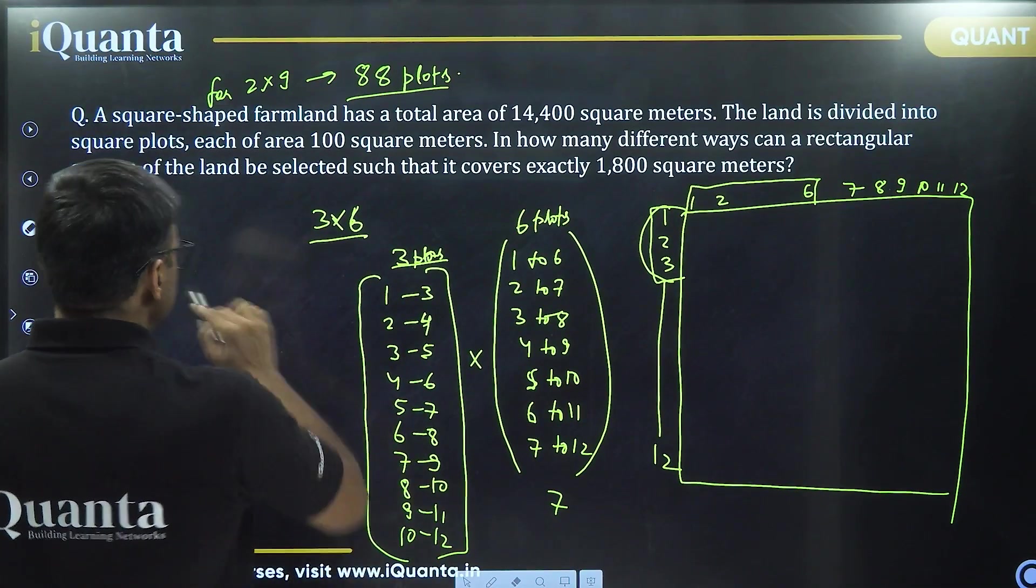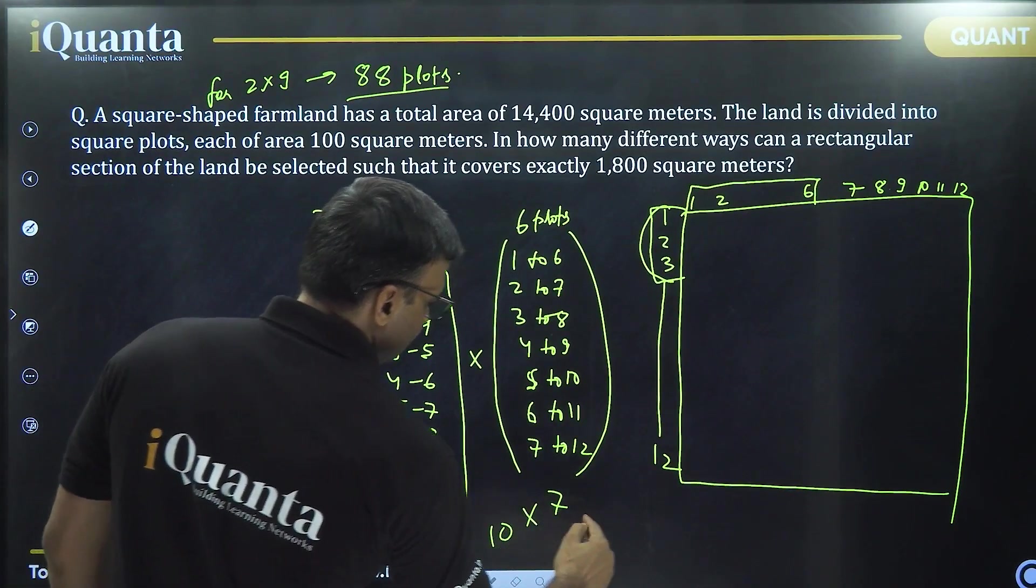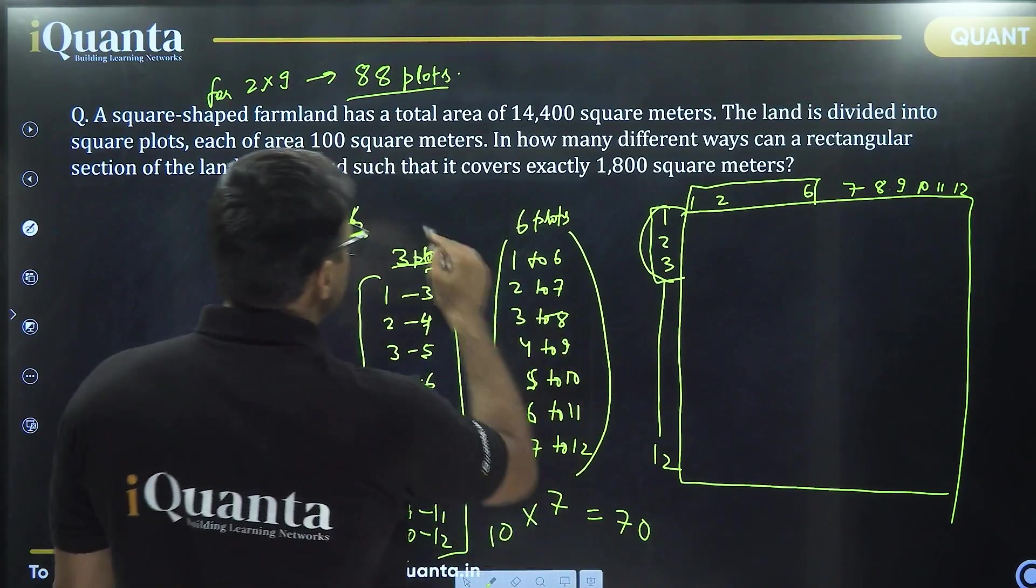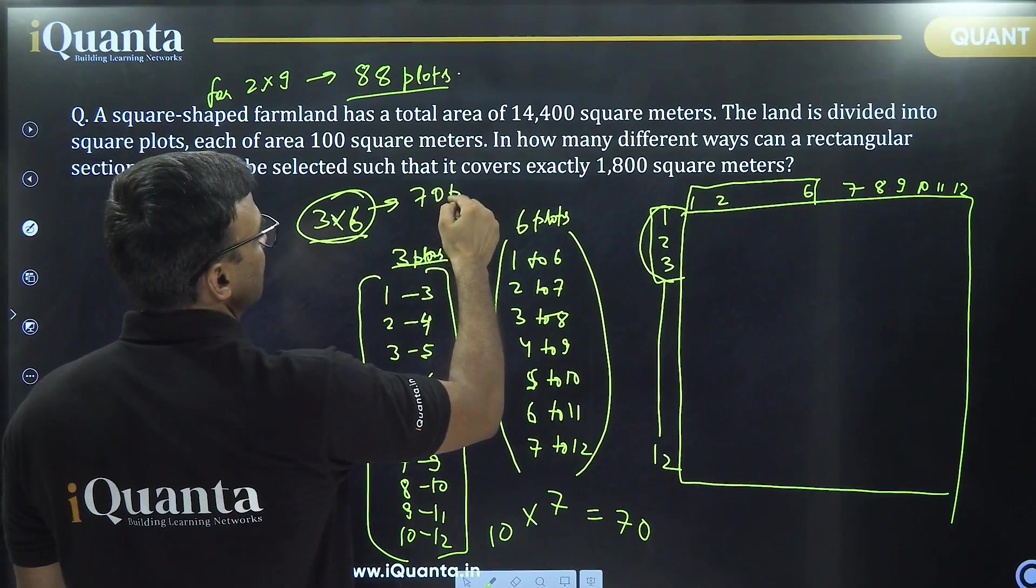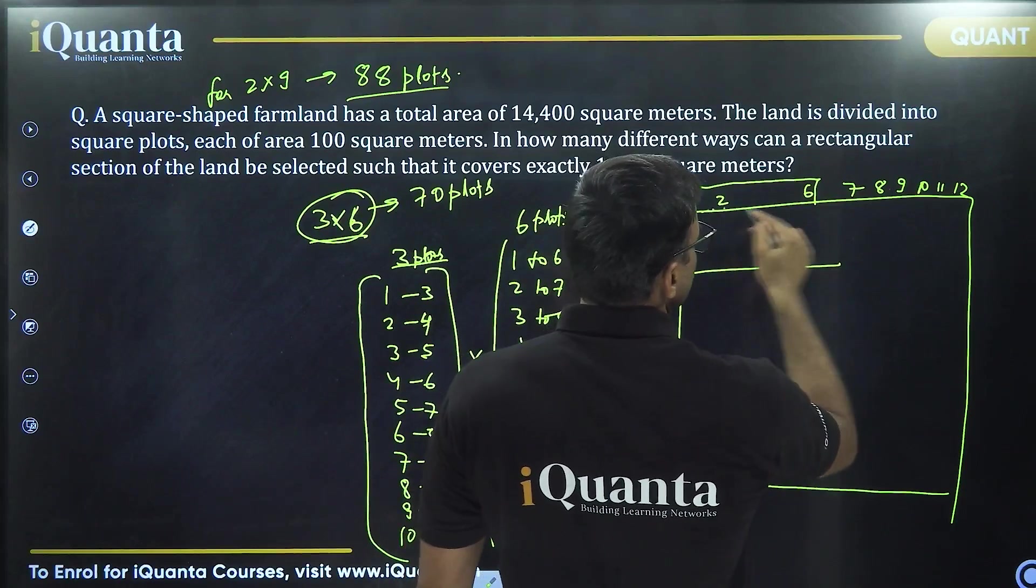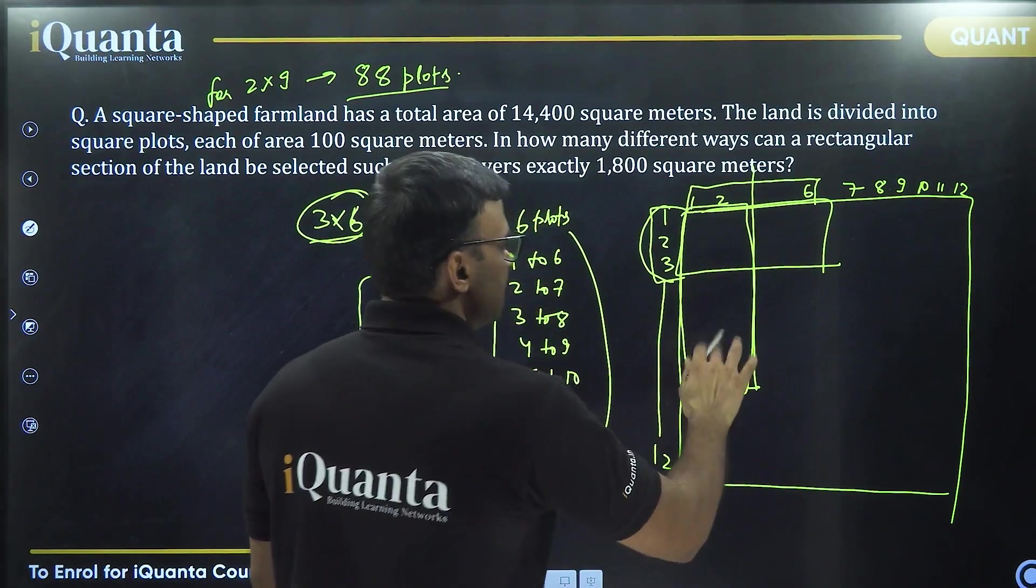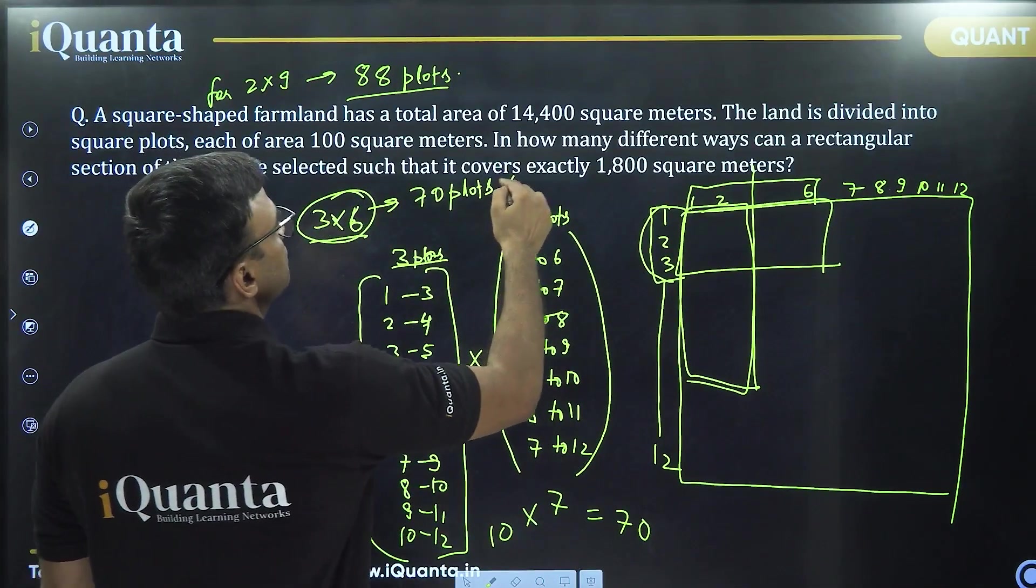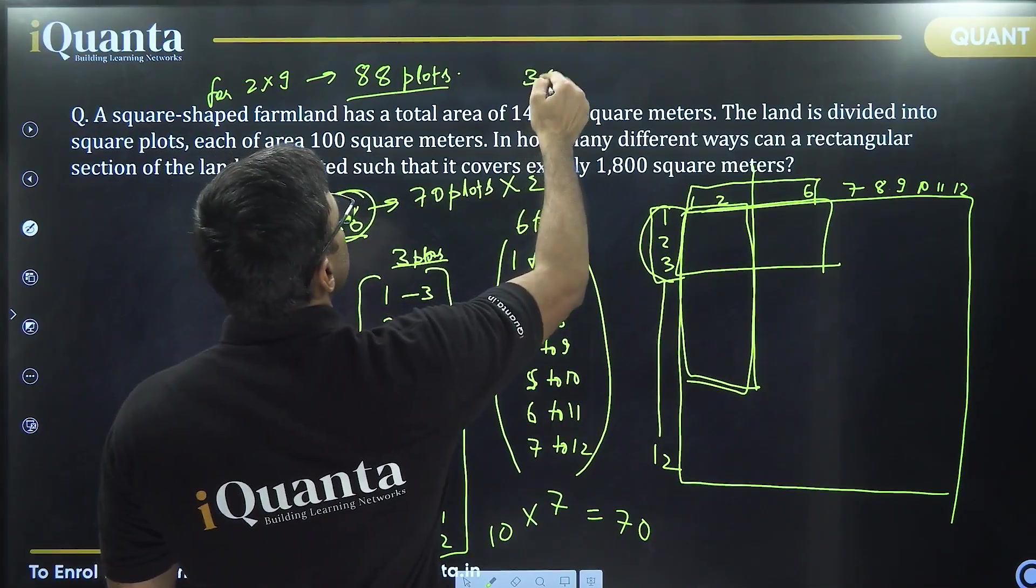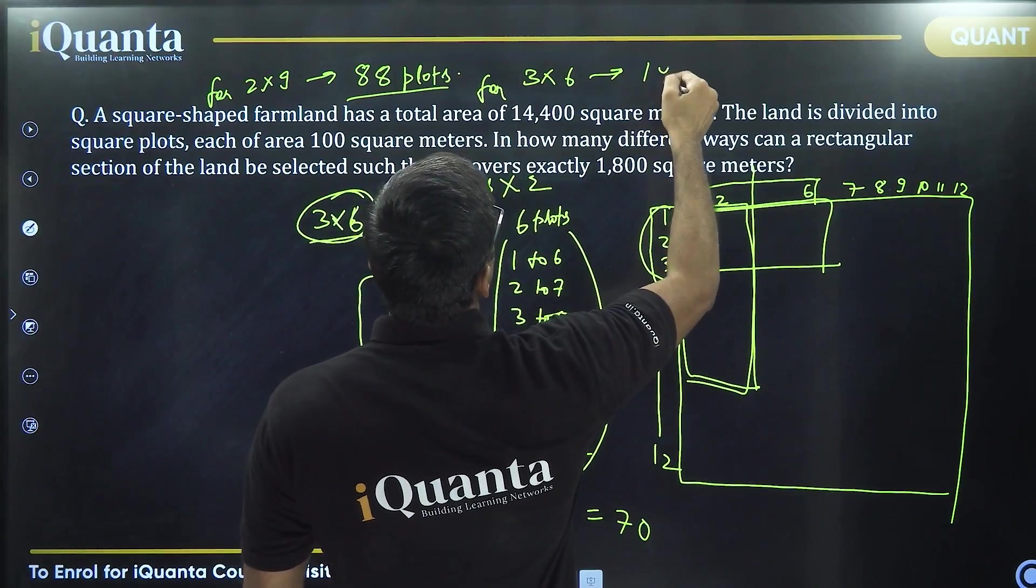So for horizontal orientation, we have 10 into 7, 70 plots for this size or this orientation. But this is only for horizontal orientation. Similarly, we can have vertical orientation, so it will be just double. So 70 into 2. For 3 into 6 size, we have 140 plots.